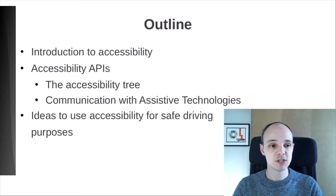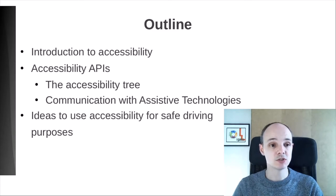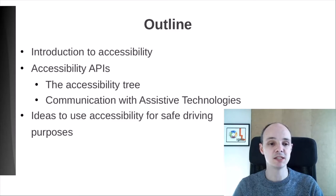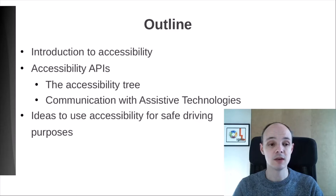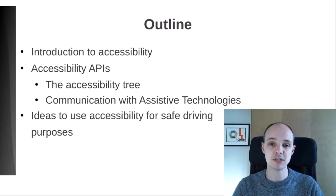In this presentation, I would like to start with an introduction to what accessibility means. I will follow with a more thorough explanation of what accessibility APIs are and how they work. I highlight two important aspects: the accessibility tree and the communication between the elements involved. Finally, I'll present some ideas on how to use these technologies for safe driving purposes.